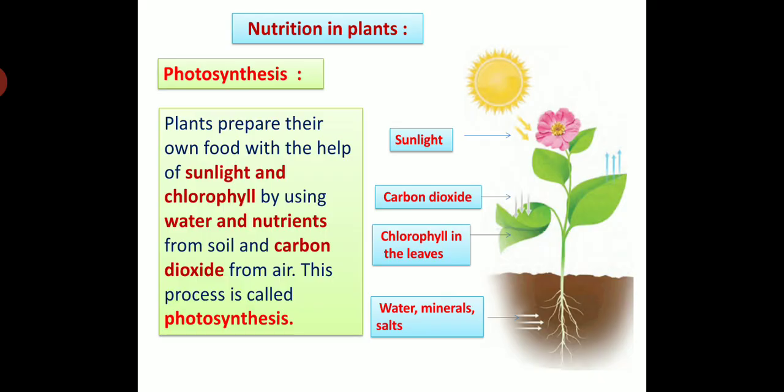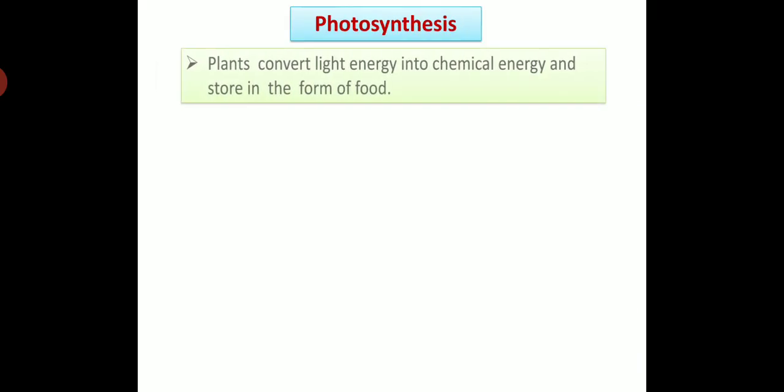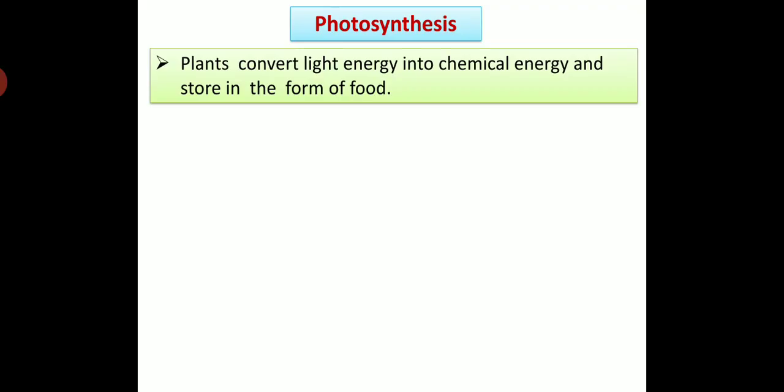In this way, carbon dioxide, water, minerals, salts, sunlight and chlorophyll are constituents necessary for the process of photosynthesis. In this process of photosynthesis, plants give out oxygen gas which mixes in the air. Plants convert light energy into chemical energy and store it in the form of food in the process of photosynthesis.